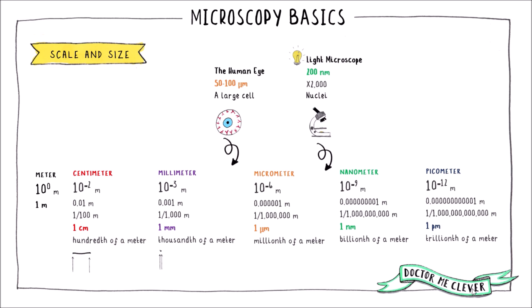Light microscopes also allow us to see large organelles like nuclei. Unbelievably, the very best electron microscopes can now distinguish between two points that are 50 picometres apart and can magnify an image up to 10 million times. Electron microscopes also allow us to see inside organelles and even visualise small subcellular structures such as ribosomes, plasmid DNA, and pathogens such as viruses. You can imagine what the power of these microscopes has done for our understanding of the inner workings of a cell.